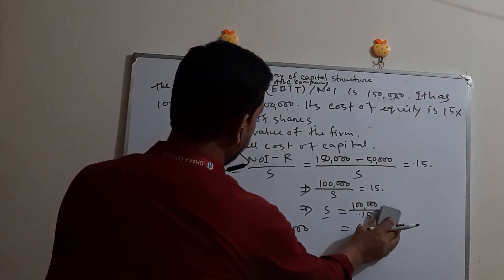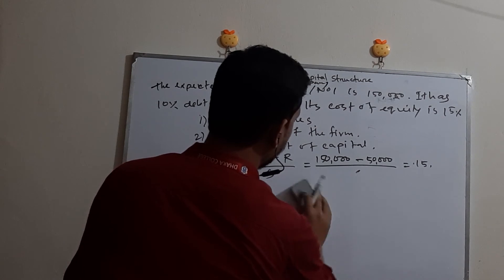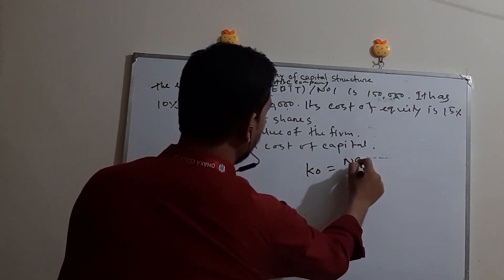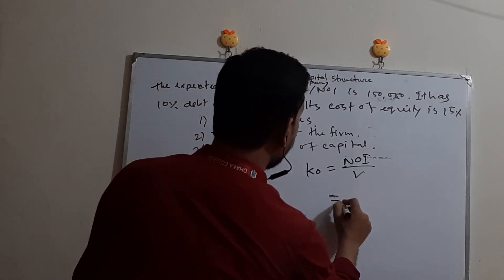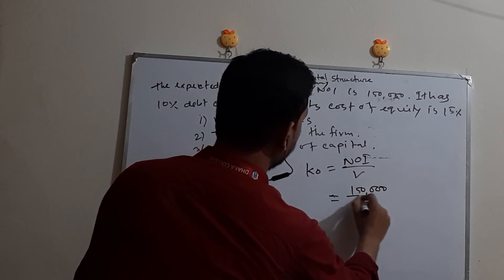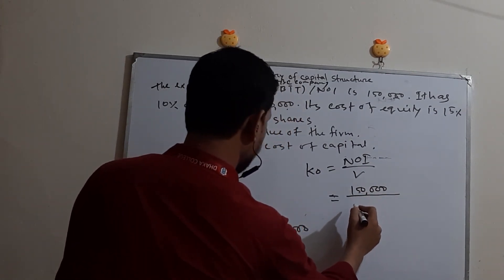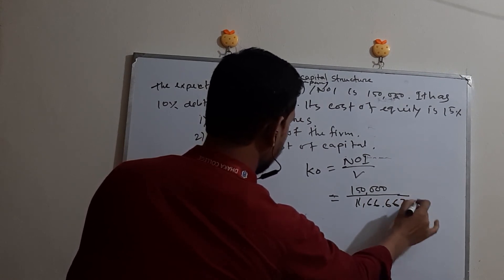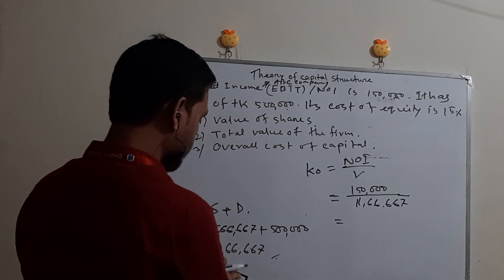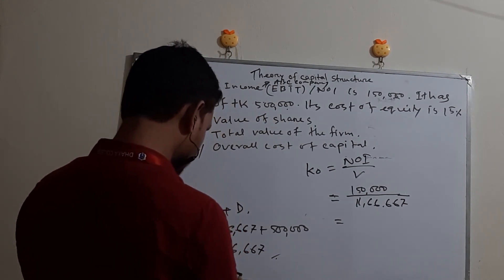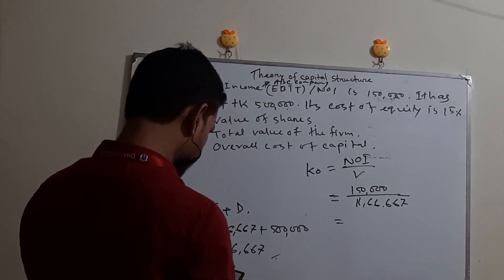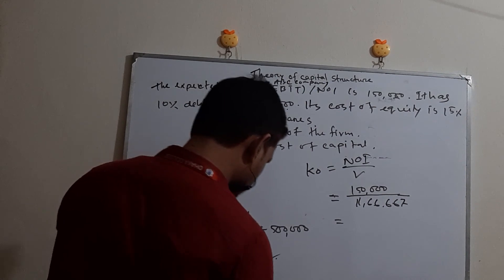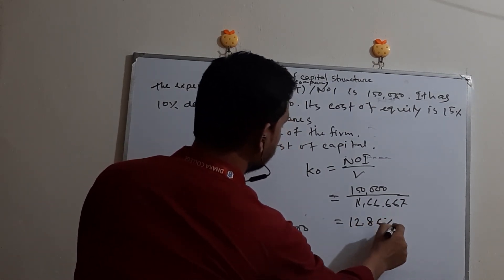Now we find the overall cost of capital Ko. Ko equals NOI divided by V. NOI is 1,50,000 and V is 11,66,667. So Ko equals 1,50,000 divided by 11,66,667, which gives approximately 12.86%.